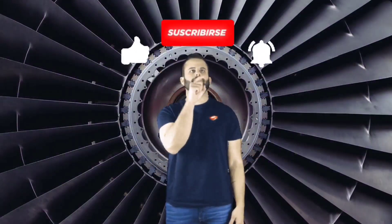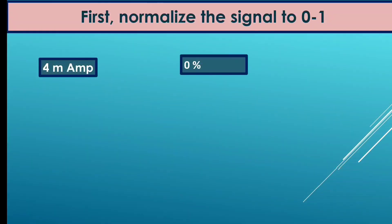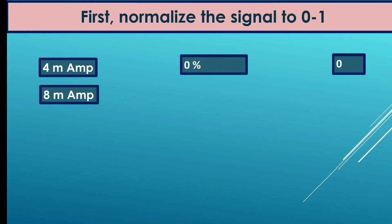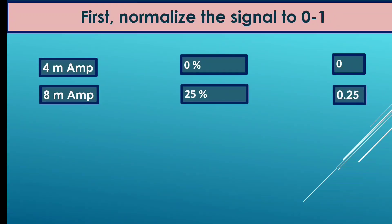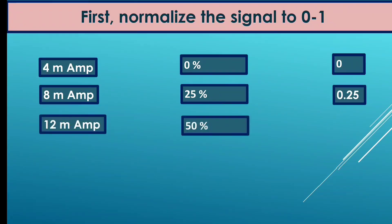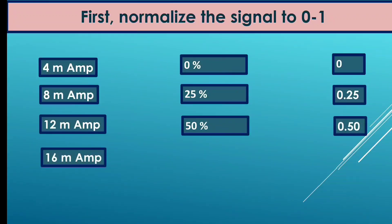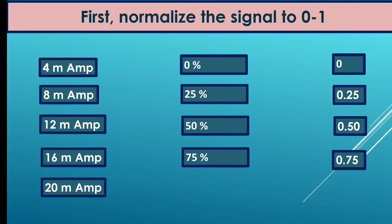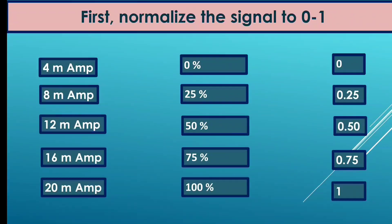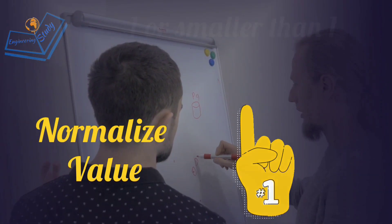Let us understand it from the table. At 4 milliampere, the output was 0%, written as 0. At 8 milliampere, the output was 25%, written as 0.25. At 12 milliampere, the output was 50%, written as 0.5. At 16 milliampere, the output was 75%, written as 0.75. At 20 milliampere, the output was 100%, written as 1. Meaning, divide the percentage by 100 and you get the normalized value. Note that the normalized value is less than or equal to 1.